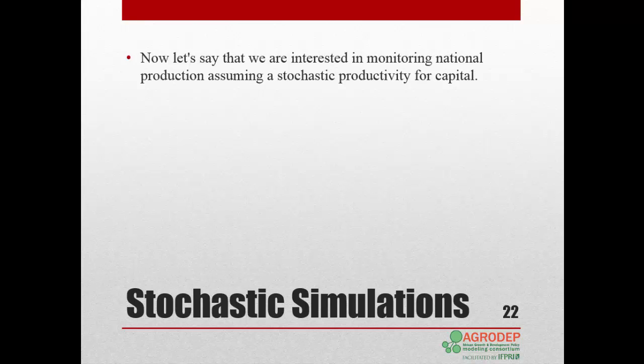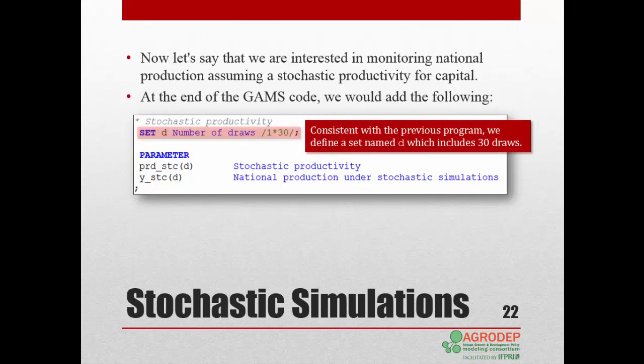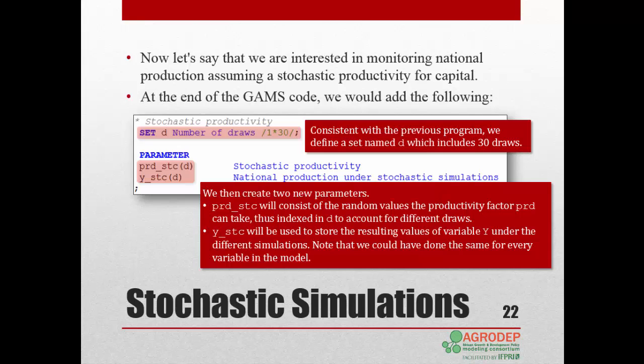Let's say we want to monitor national production given the stochastic productivity of capital. At the end of the main GAMS program from Lesson 8, which we just modified, we add the following. Consistent with the separate GAMS program, draw.gms, we define a set named D, which includes 30 draws, and create two new parameters: prd_stc, which will store the random values of the productivity factor prd over the 30 draws, and y_stc, which will store the resulting values of variable Y under the different simulations or draws. Note that we could have chosen other variables to monitor. In our example, we focused on national income, but you could have followed the same process for every variable in the model.